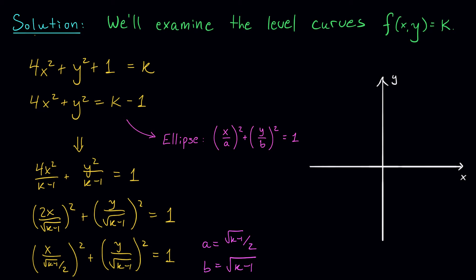Now, before we actually start sketching our level curves, it'll be helpful to think about what values of k we can actually use in this expression. Notice that since we're trying to take the square root of k - 1, k - 1 must be greater than or equal to 0. Or in other words, k must be greater than or equal to 1.